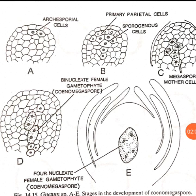Each megaspore mother cell nucleus divides by meiosis to form first two, and then after a long gap, four haploid nuclei. However, wall formation between the nuclei does not occur — as you can see in figure E, there are four nuclei but no wall formation between them. Each megaspore mother cell with four haploid nuclei becomes converted into a coenomegaspore.